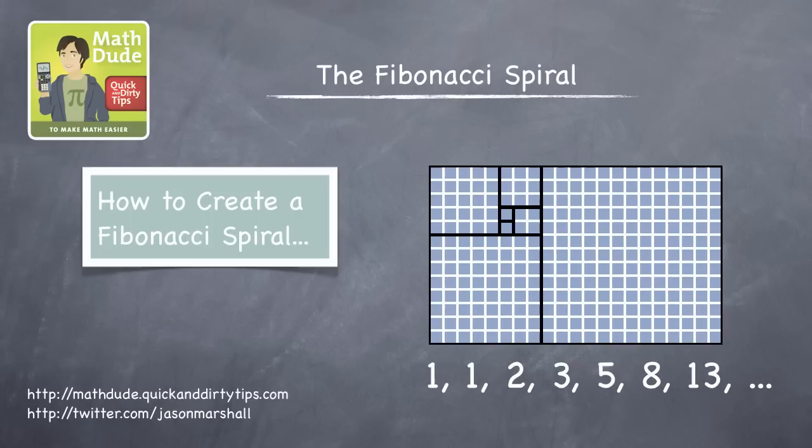The length of the side of each square is a Fibonacci number. Now, let's focus on the following diagonal corners of each square. And then, let's draw some sweeping arcs connecting them.